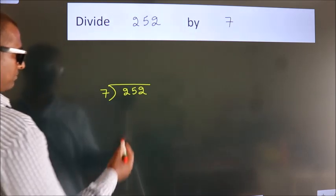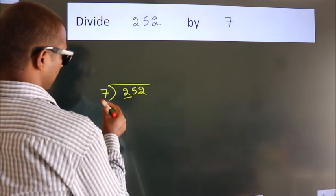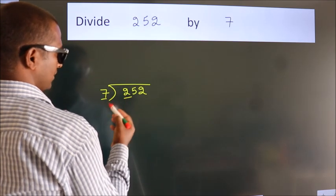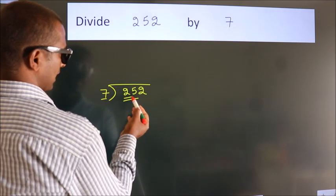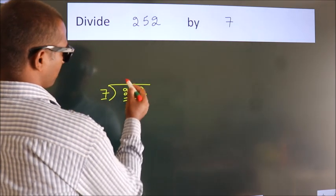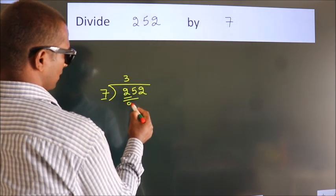Next, here we have 2, here 7. 2 smaller than 7, so we should take 2 numbers, 25. A number close to 25 in 7 table is 7 threes, 21.